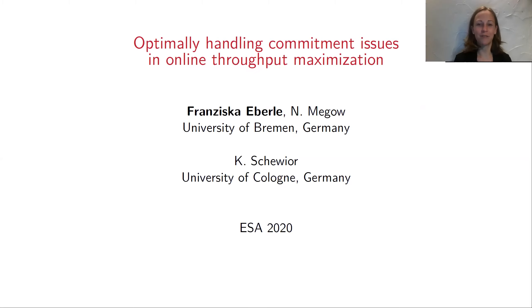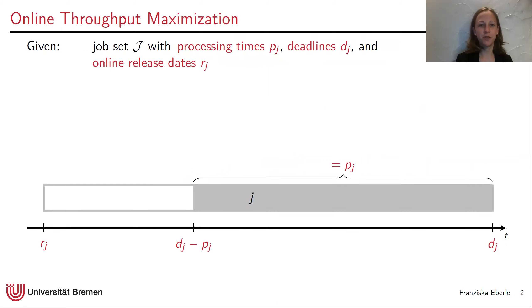Let's start with a problem definition of online throughput maximization. We are given a job set J. Each job comes with a processing time — the darker part of the interval — and also each job has a deadline and a release date. The important thing is that the release dates are online, meaning only upon release of a job does the scheduler get to know about the job.